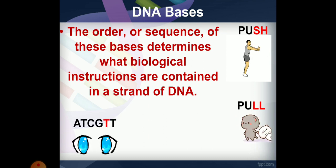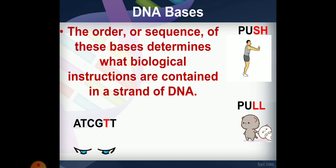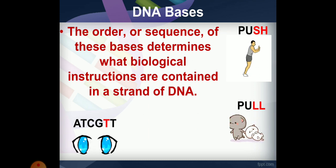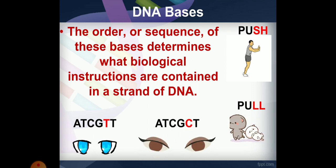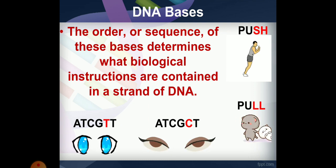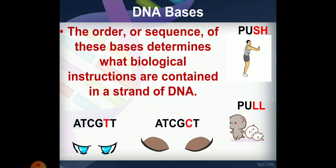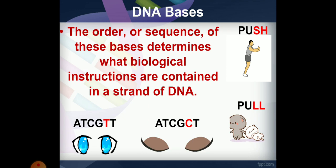For example, the base sequence ATCGTT codes for blue eyes, while ATCG codes for brown eyes. These sequences are the basis of genetic traits.